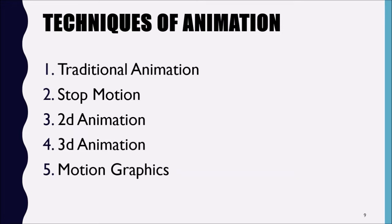Stop motion is another technique where you use real pictures or real objects. You take a series of photos — for example, take a picture of a cup standing straight, then move it slightly and take another picture, then move it again. If you play those four pictures in succession, what you actually see is the cup falling down, rolling to another direction. That's the idea of stop motion.